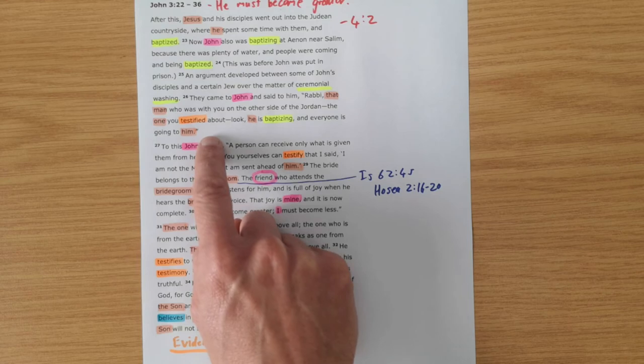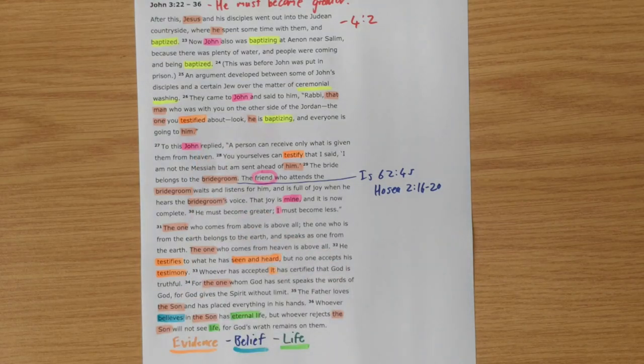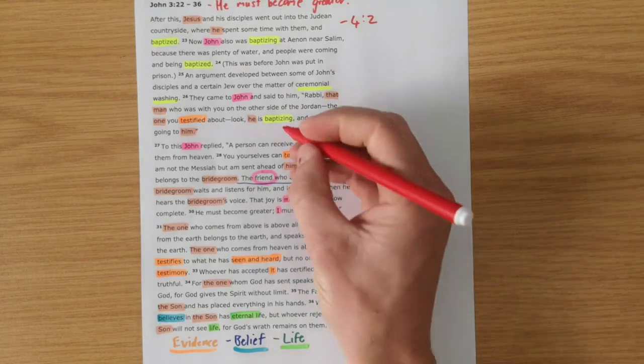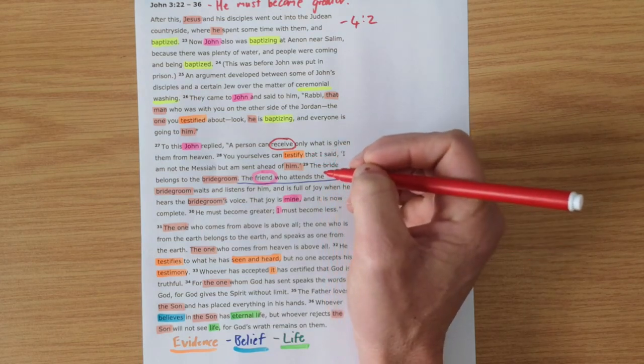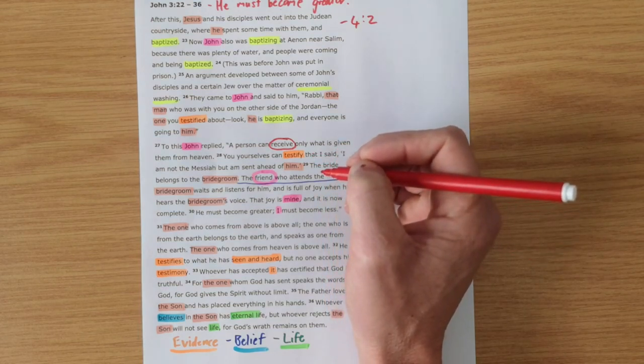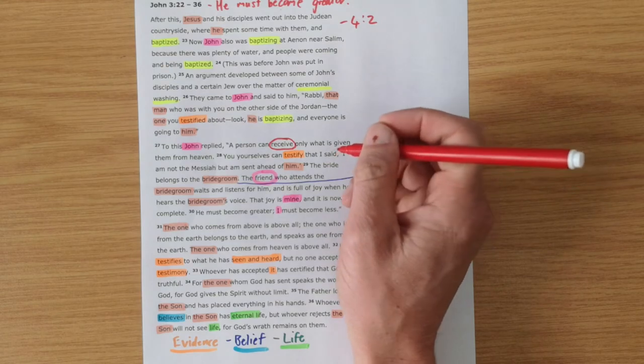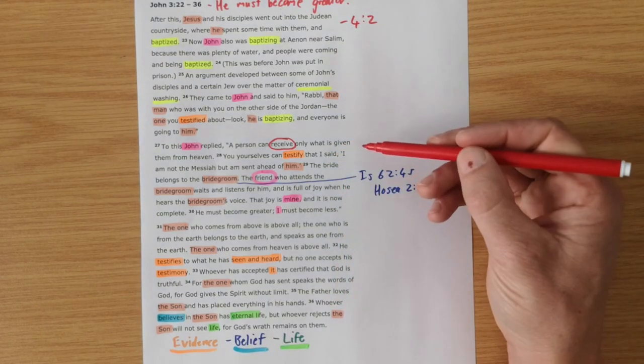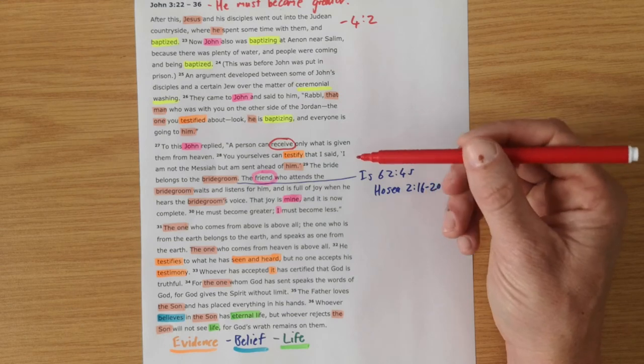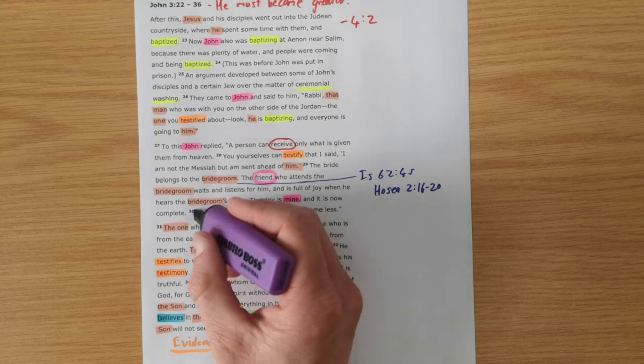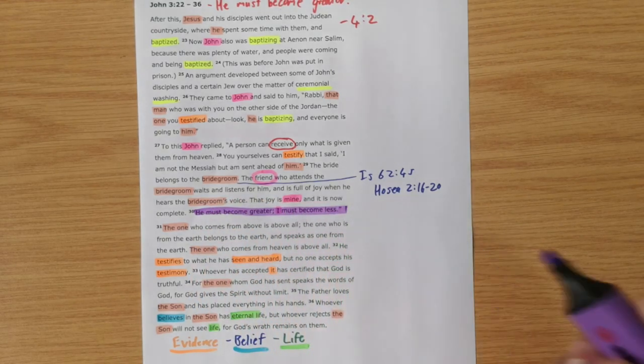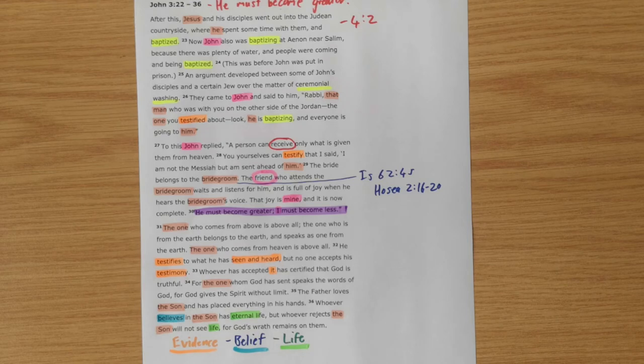And John demonstrates beautifully that this jealousy has no place in the ministry because he knows that the work he's doing has been received by God and he can only do what has been given to him from heaven. And it's a great teaching point that John the Baptist is pointing away from himself and saying that Jesus is the one who must become greater. That's a great motto for the Christian life that all of us could adopt.